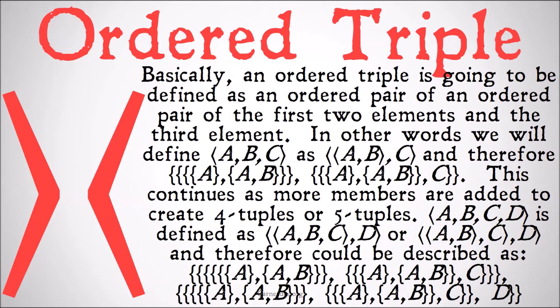This continues as more members are added to create four-tuples or five-tuples. The ordered quad-tuple A, B, C, D is defined as the ordered pair of the ordered triple A, B, C and D — or the ordered pair A, B paired with C paired with D, and so on and so forth.